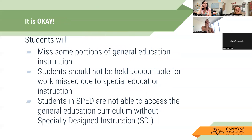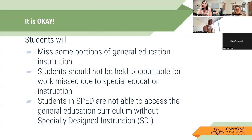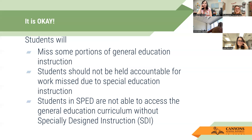My big message is: it's going to be okay. Students are going to miss more portions of general education than they have in the past, because we are looking at the simple view of reading and making sure we have both sides — the word reading piece with the 95% portion, and then Wonders and Wonderworks for the reading comprehension piece. This is the time we are bringing them out of the classroom more than ever before, because we have really great resources. Students should not be held accountable for work missed due to special education instruction — we're not double-dipping. That would be unfair to a student who is already working harder than many peers.